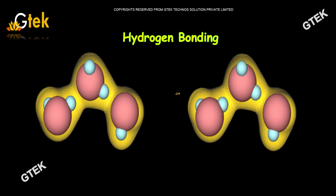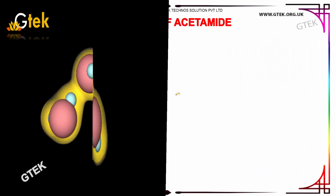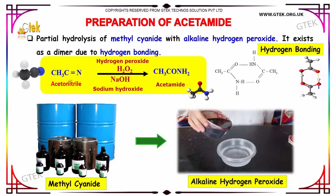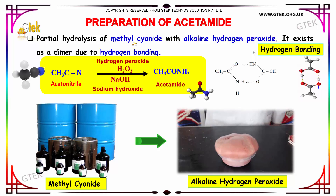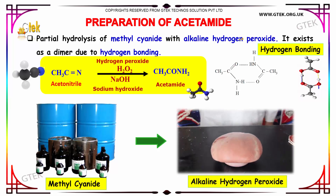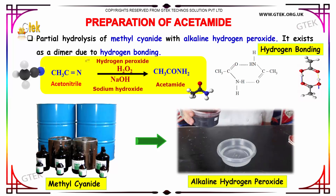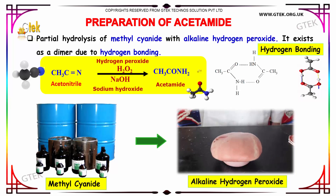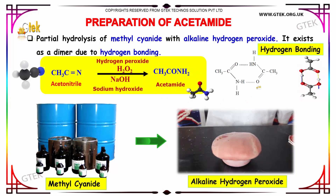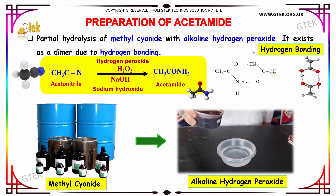Hydrogen Bonding: The partial hydrolysis of Methyl Cyanide with Alkaline Hydrogen Peroxide results in the formation of Acetamide. Acetamide exists as a dimer due to hydrogen bonding. This is the general structure of Acetamide.